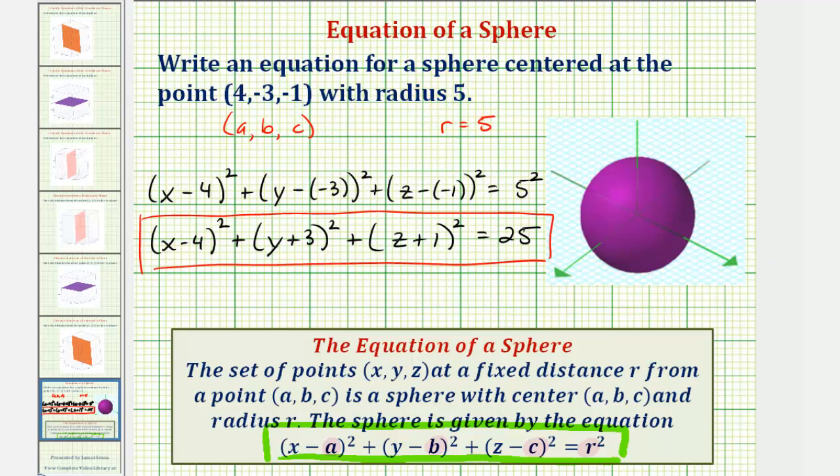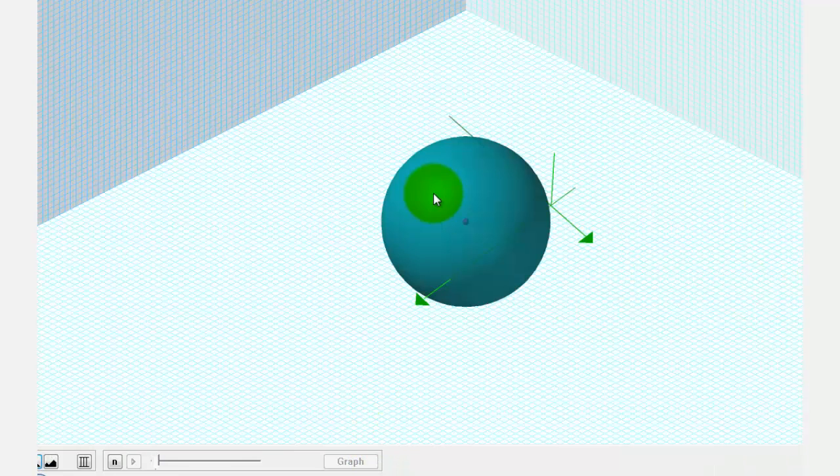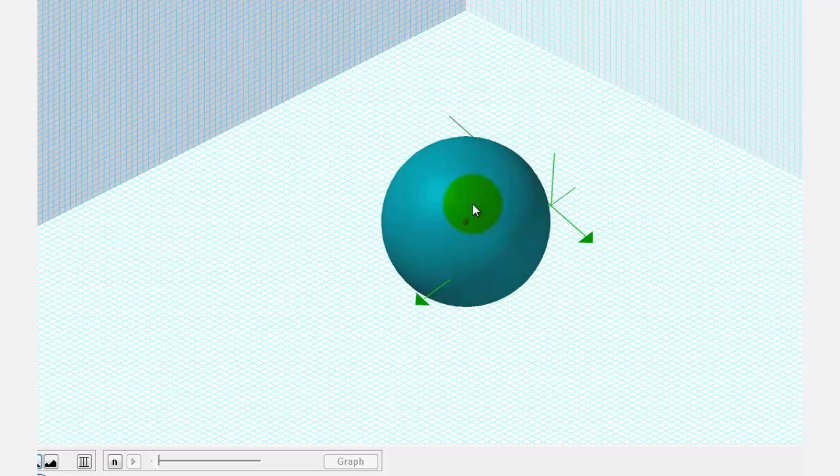Let's take a look at the graph of the sphere. Here's the graph of our sphere. This dark point is the center with coordinates (4, -3, -1).